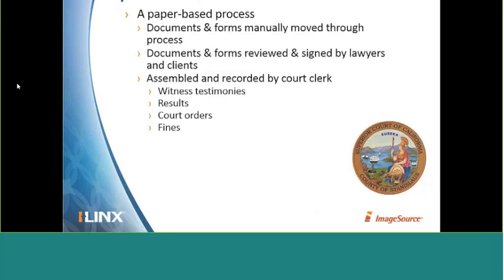Let's take a quick look at a before and after snapshot of the Stanislaus Court. In the past, when a court proceeding was completed, the court clerk would assemble and record a number of paper documents and forms including witness testimonies, court orders, rulings, and any fines or settlements. This paper was then shuffled around the courtroom to be reviewed and signed off by lawyers, plaintiffs, and defendants, and then handed to the judge for final review and signature before the entire paper bundle was filed away. All of these activities take significant time and introduce potential for human errors — missed signatures or incorrect information — and important information remains locked inside these paper forms, requiring re-keying into the Stanislaus system of record.